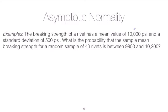In this example, maybe it comes from a mechanical engineering application. We're thinking about the breaking strength of a rivet. For a particular class of rivets, the breaking strength has a true mean value of 10,000, so that's our mu in this example, and it has a standard deviation of 500, so this would be our sigma. These are population quantities.